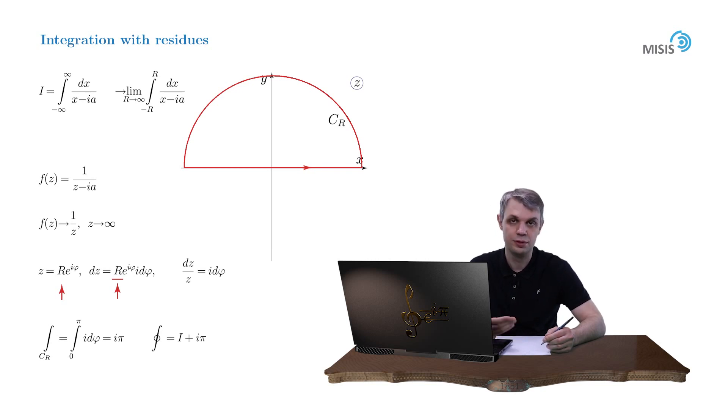And concerning this integral, the continuation is almost trivial, right? Because if a is positive, then we have precisely one pole inside our contour, and the residue at this pole is equal to 1. So our closed-contour integral in this case is equal to 2 pi i, and our original integral for positive a is simply pi i.